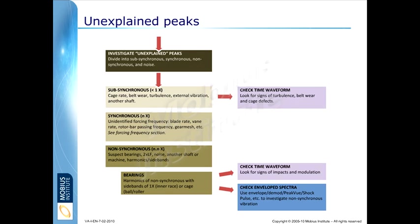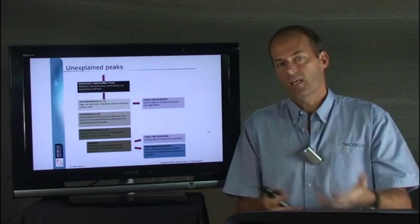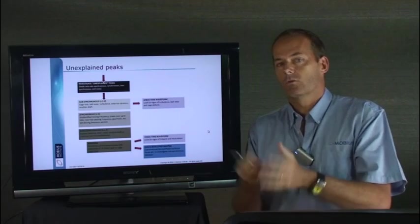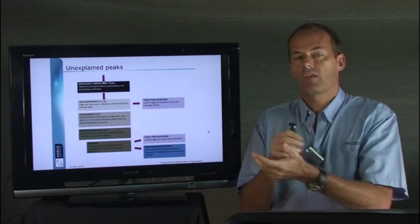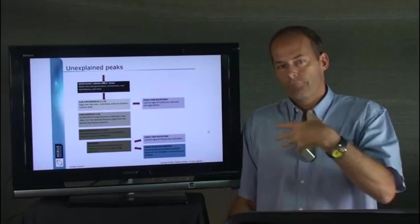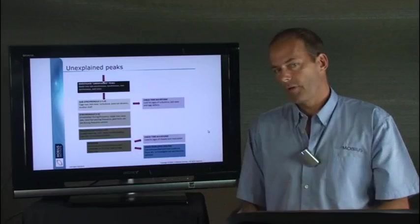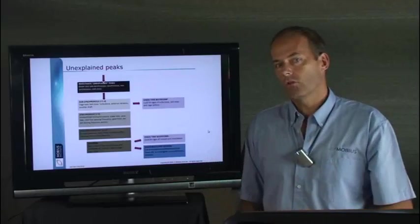If the vibration is synchronous, in other words, an integer, whole number, multiple of the running speed, then that's going to make you think along a certain line. Pump vanes and vanes, blades, and all these sorts of rotating elements will have seven or eight or nine blades, but they won't have four and a half. Won't have 4.68 blades. So, when you see peaks that are synchronous, start thinking about what don't you know about the machine? Could it be the pump vanes rate? Could it be a blade passing frequency? Think along those lines.